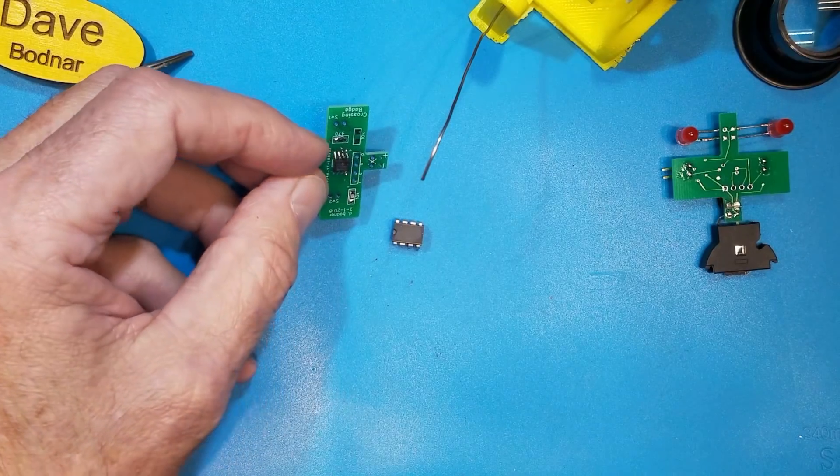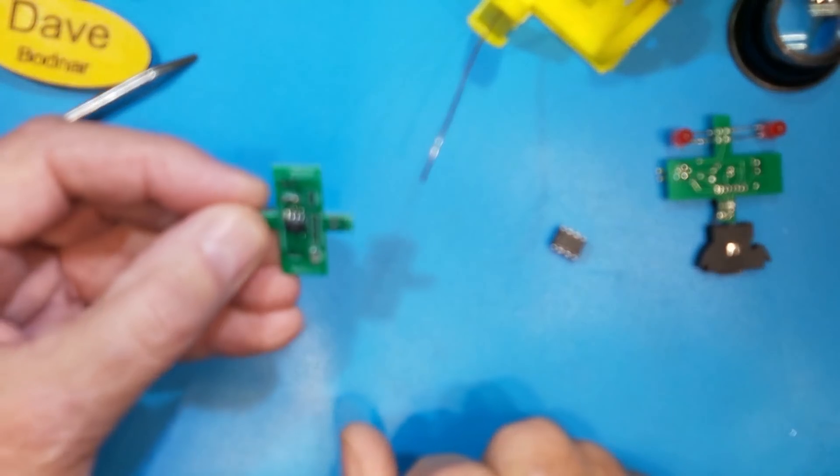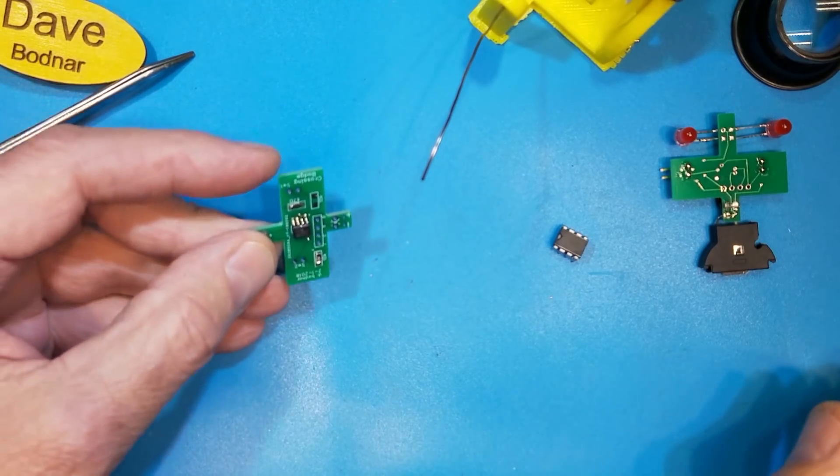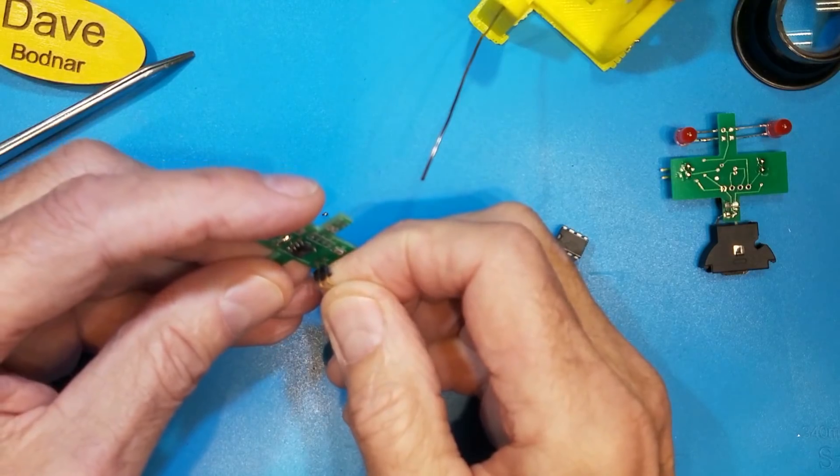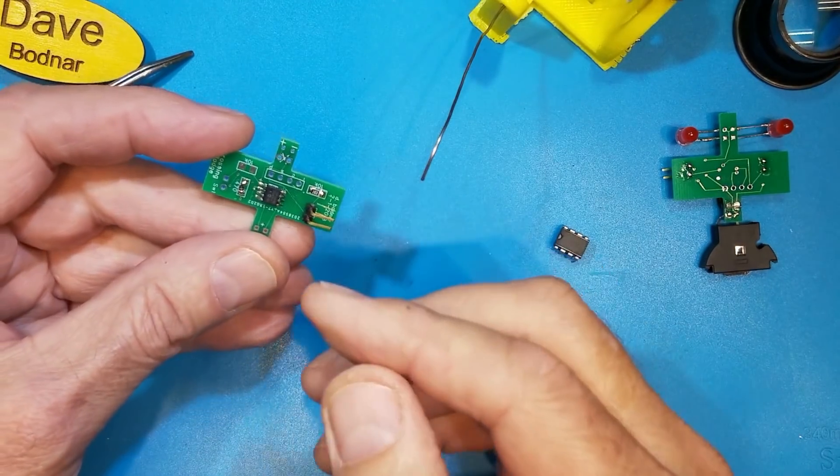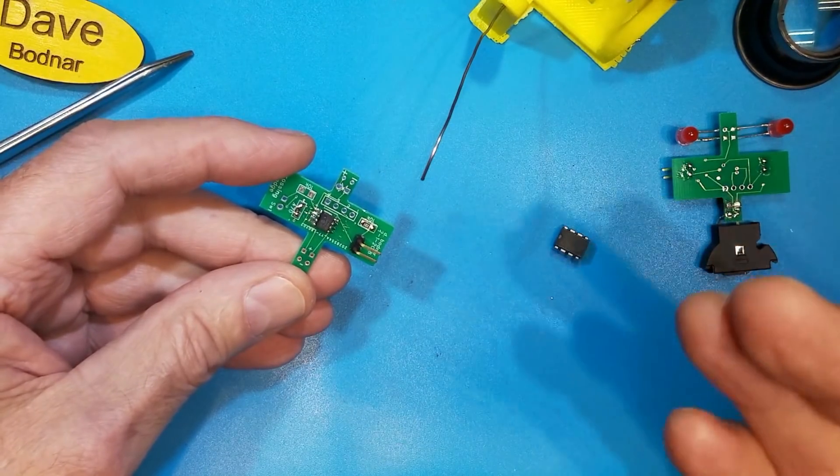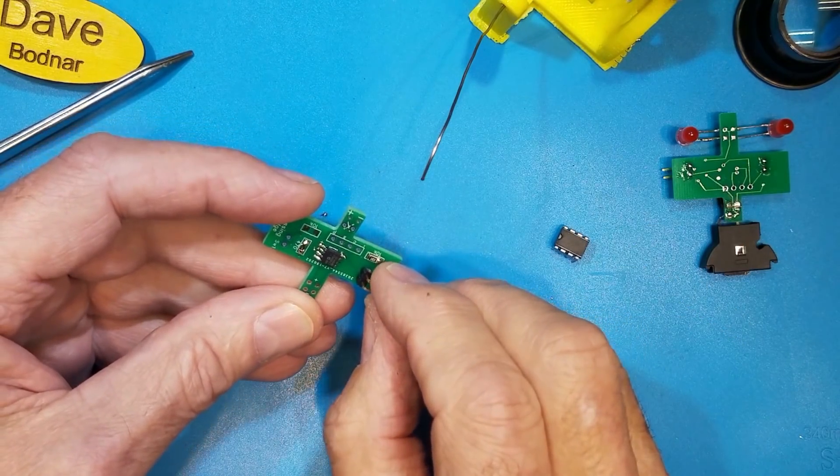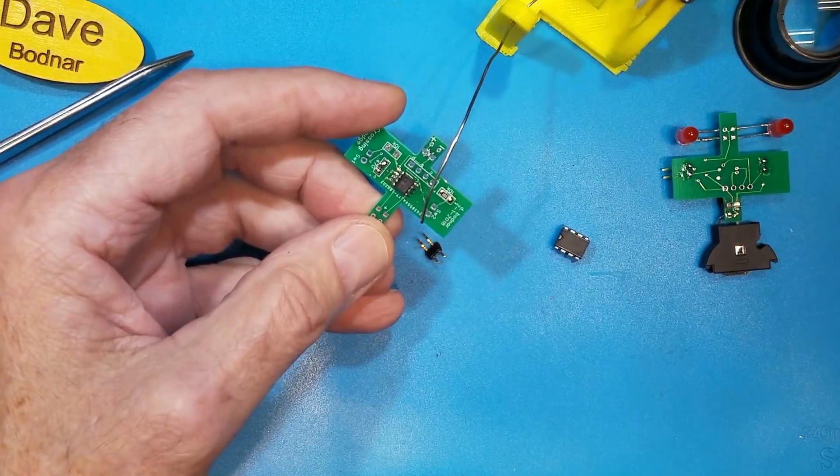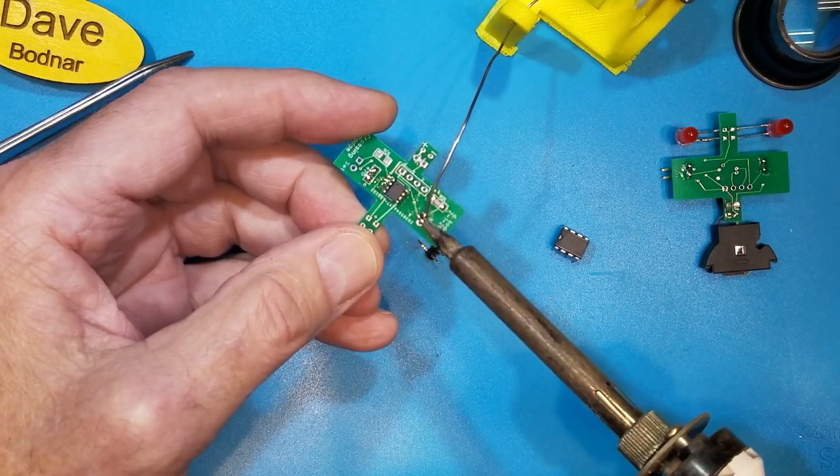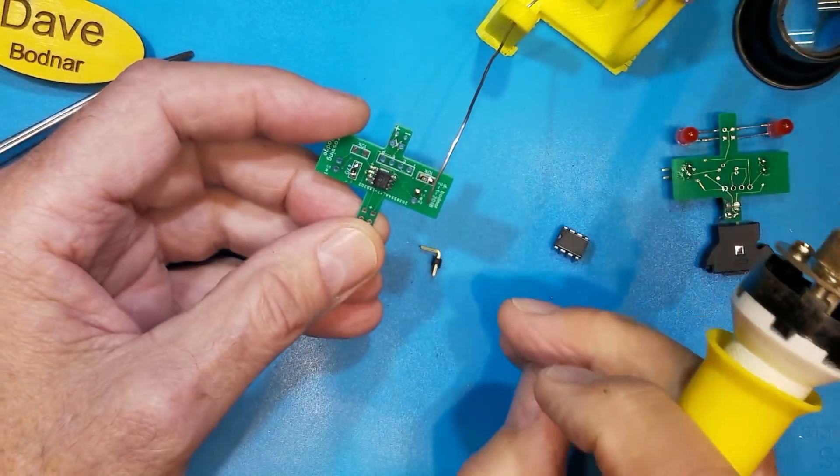Okay, solder bridges. Now there's one other type of solder mishap that you sometimes need to recover from. I have little jumpers that go into the holes here so that I can change the behavior of the lights. I can have these blinking lights either blink or fade or flash on and off. There's all sorts of options. But sometimes you'll get a little bit of solder in one of these holes. Let me show you.